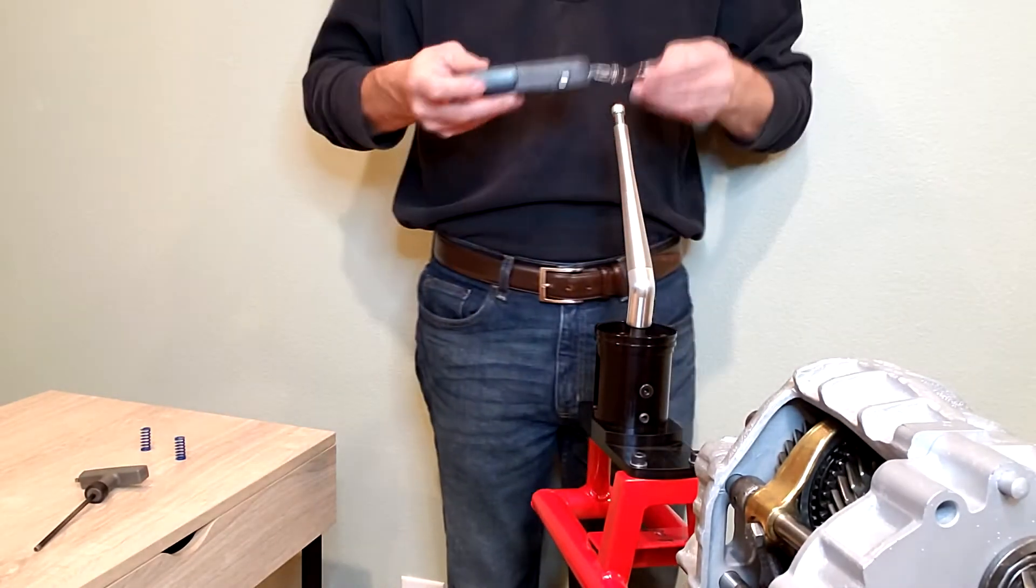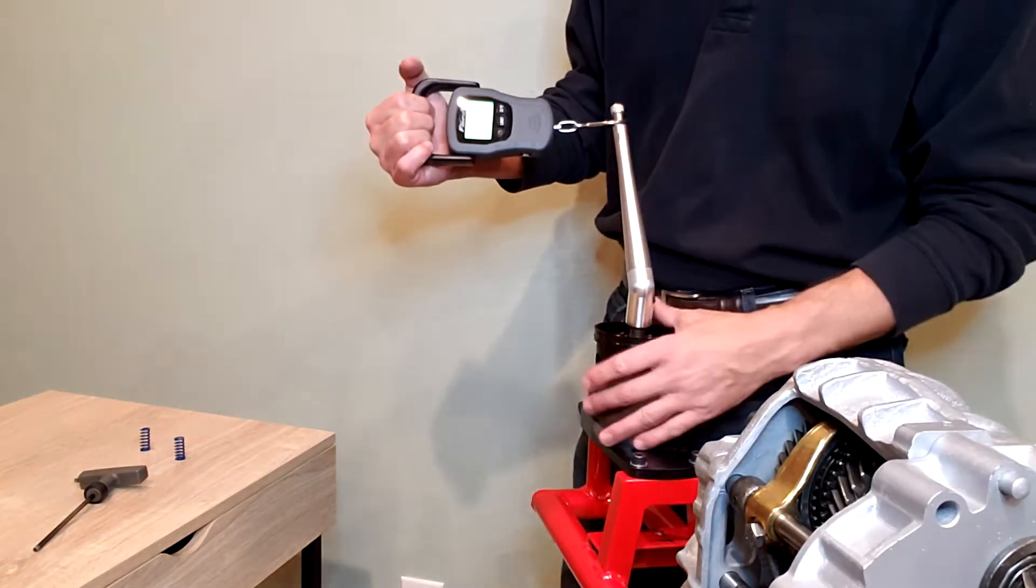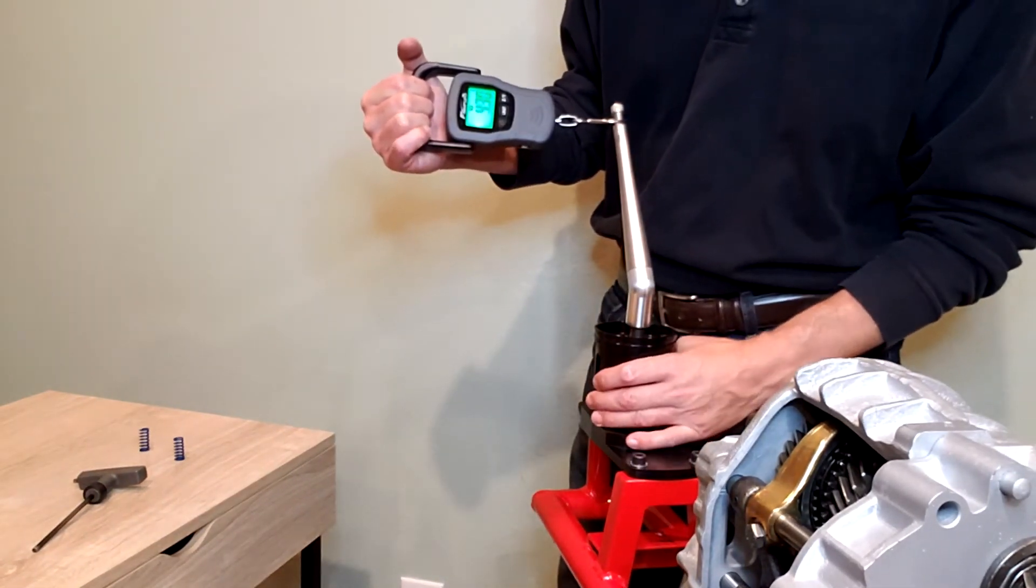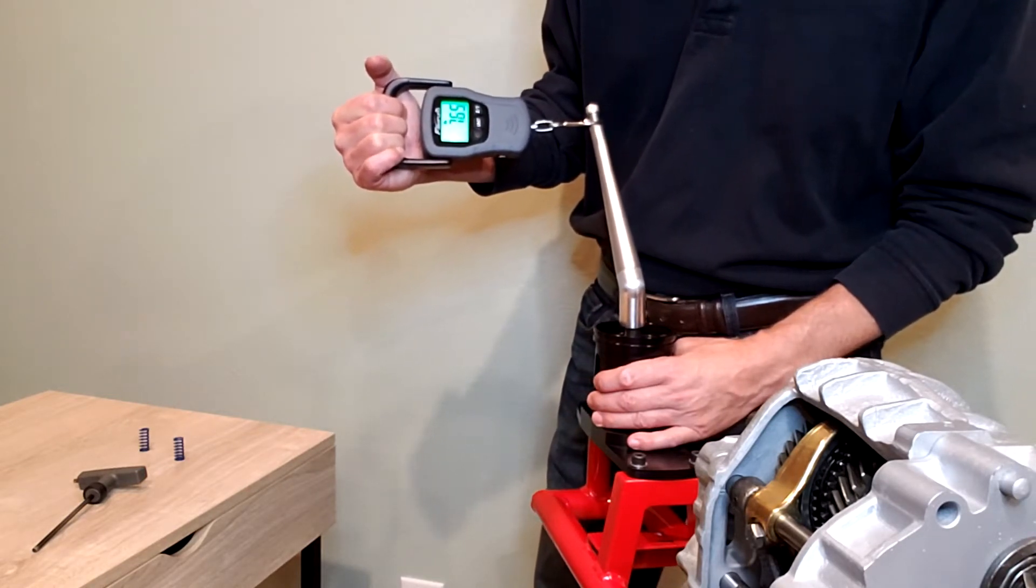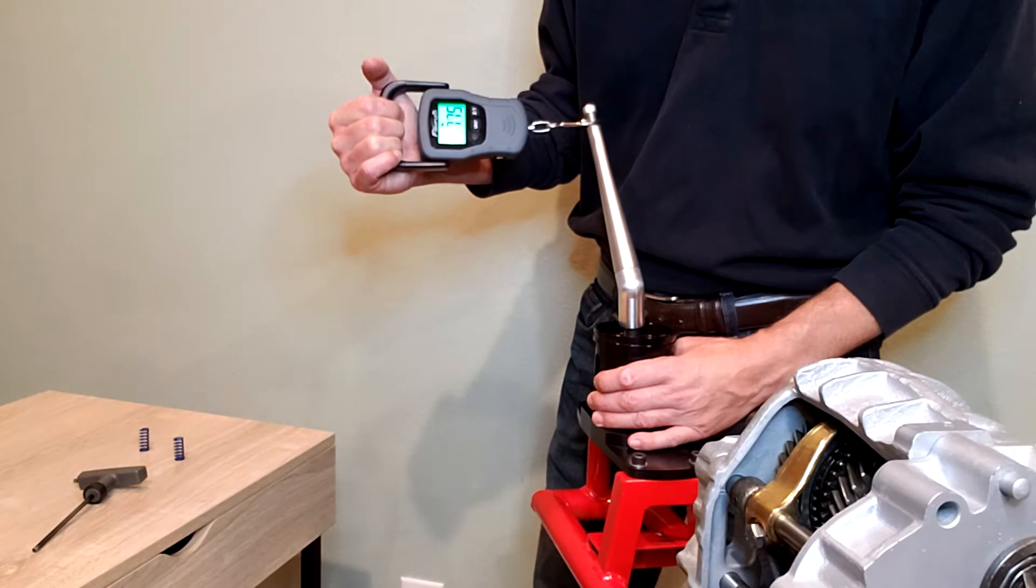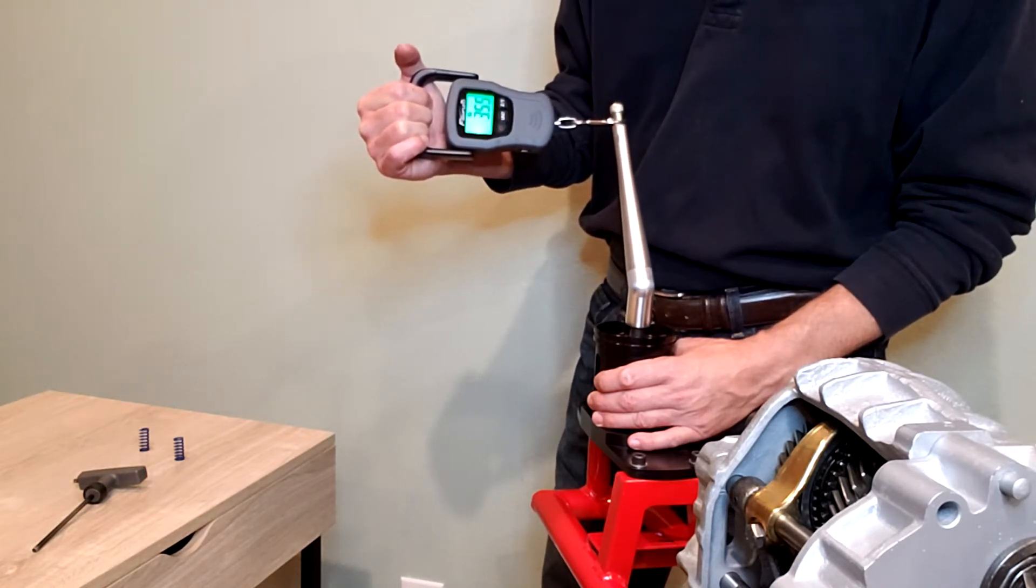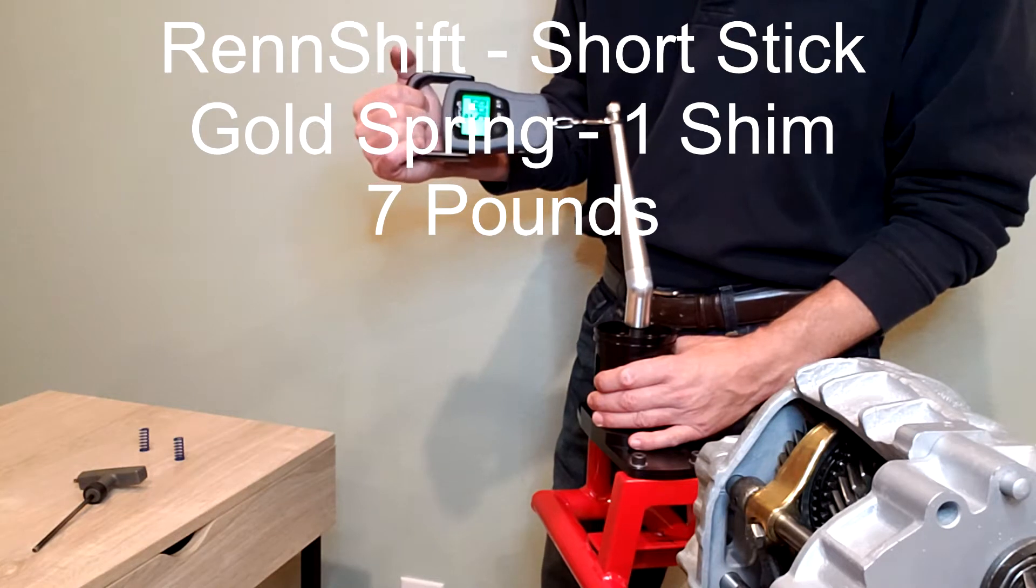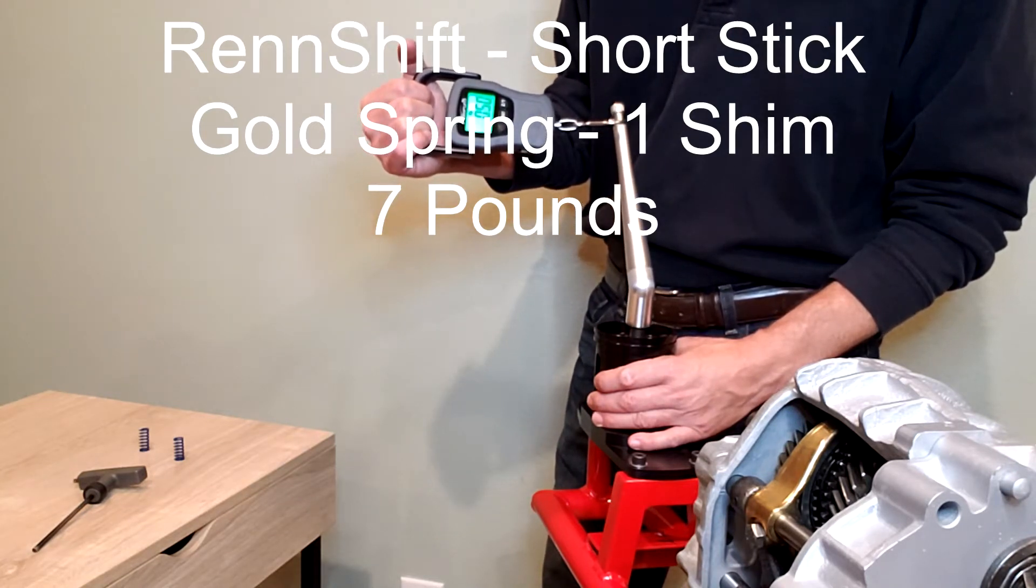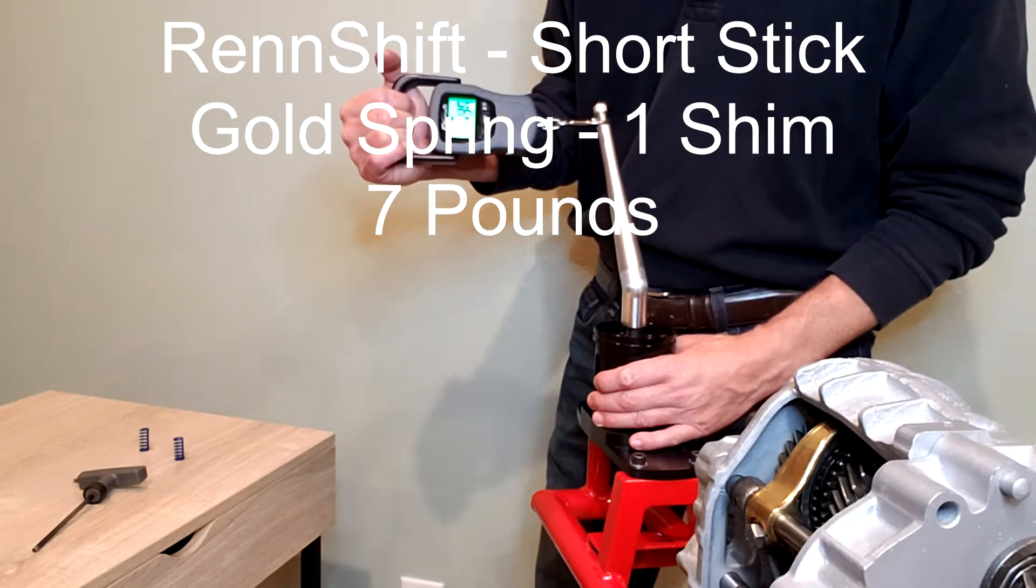Now we'll do the other side which is a single shim washer with the gold spring. That's about seven pounds with one inch movement.